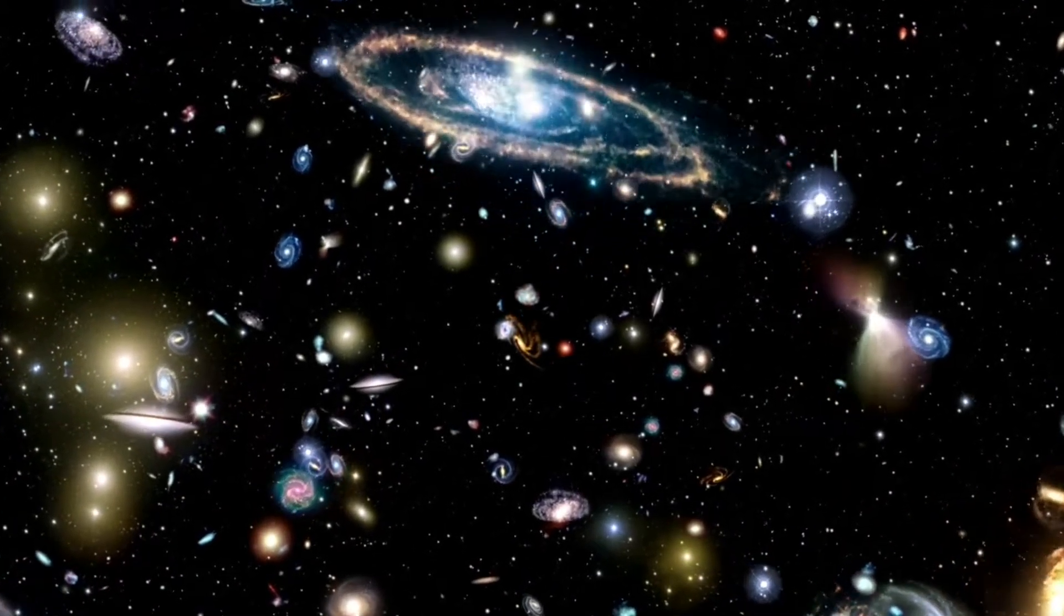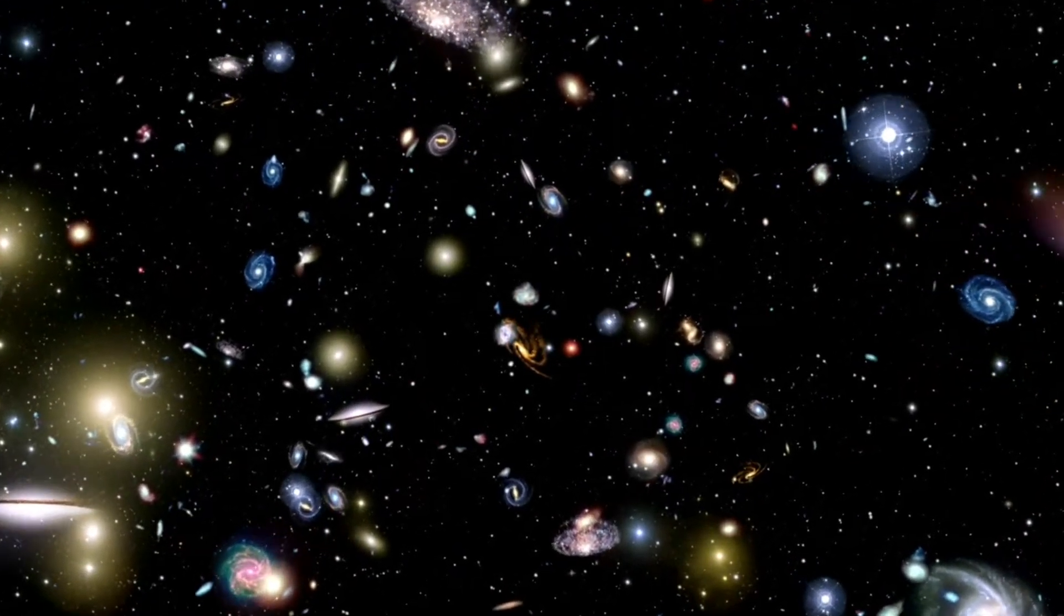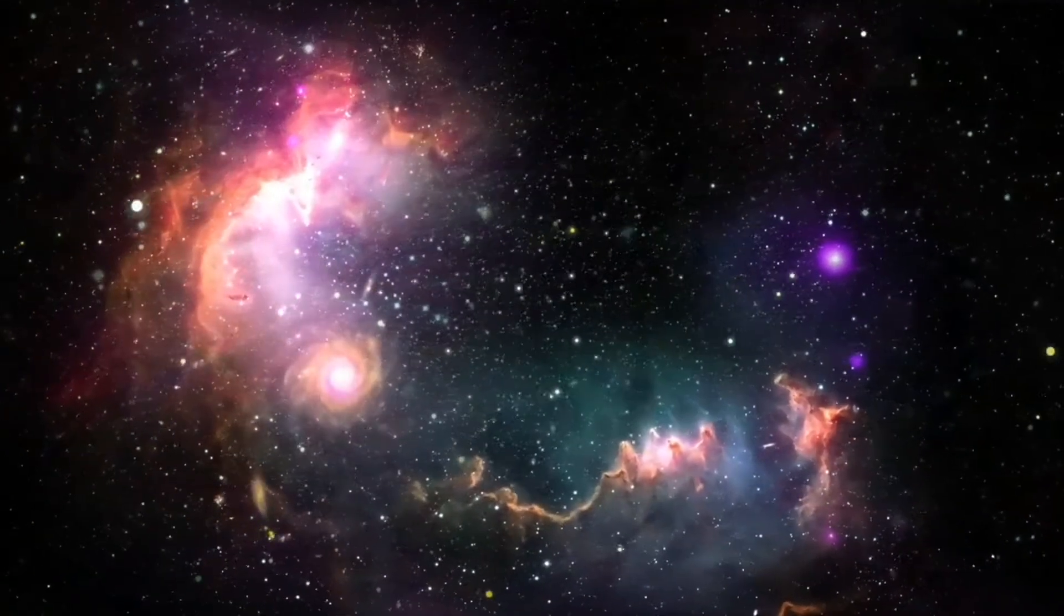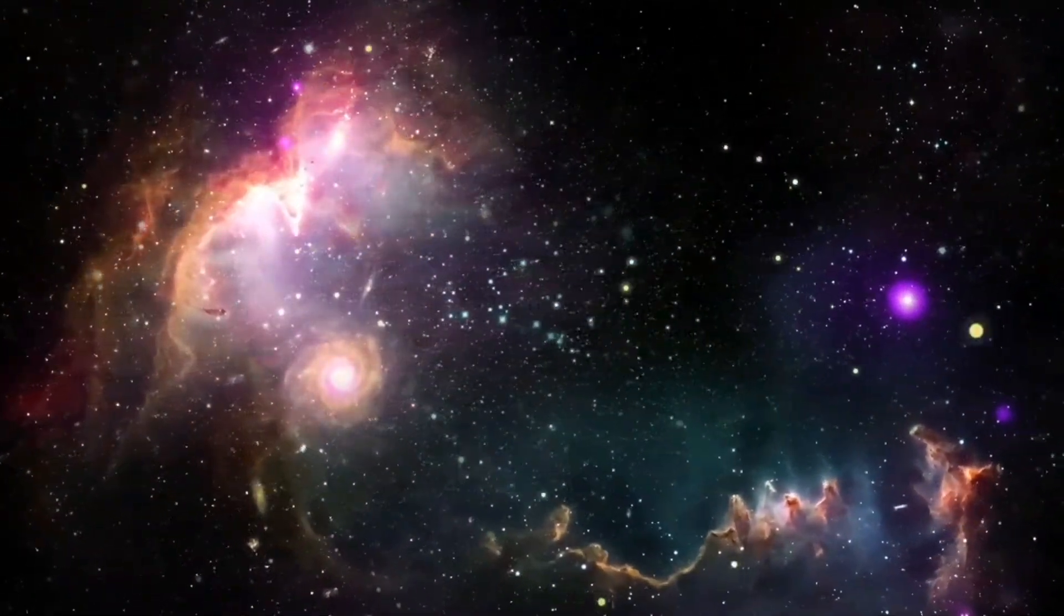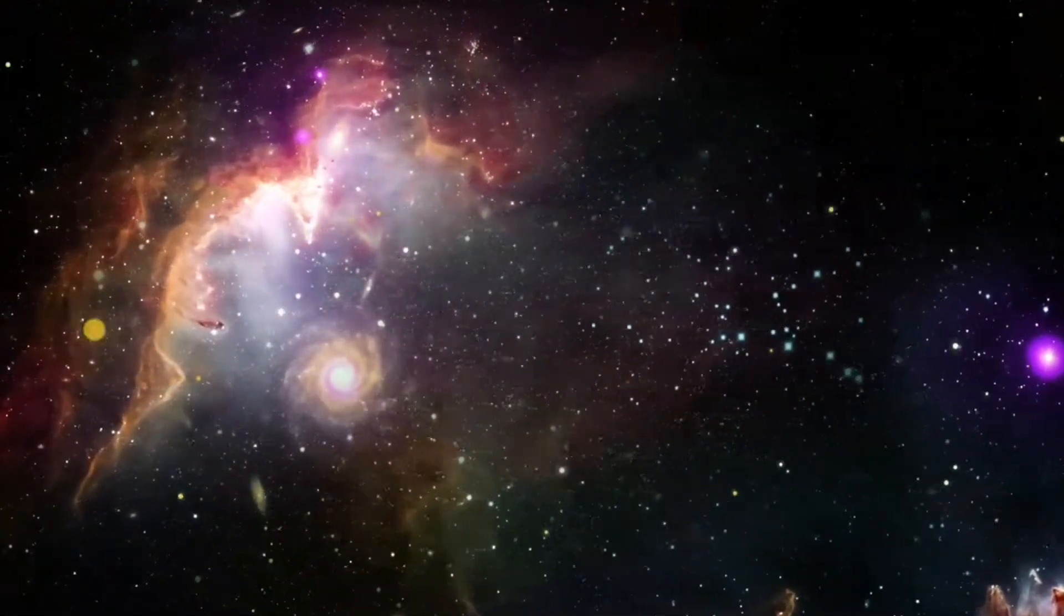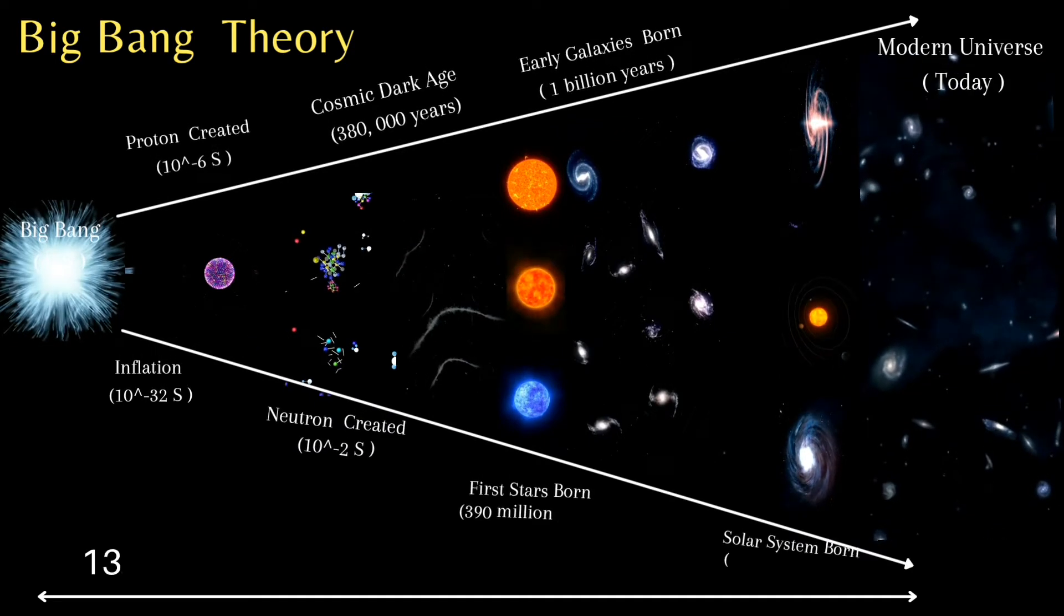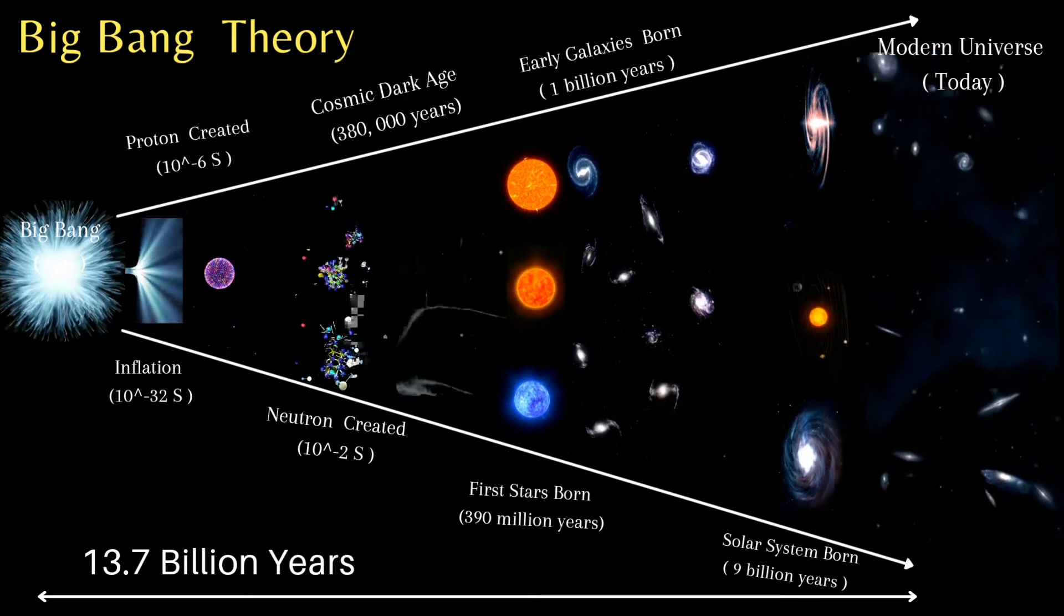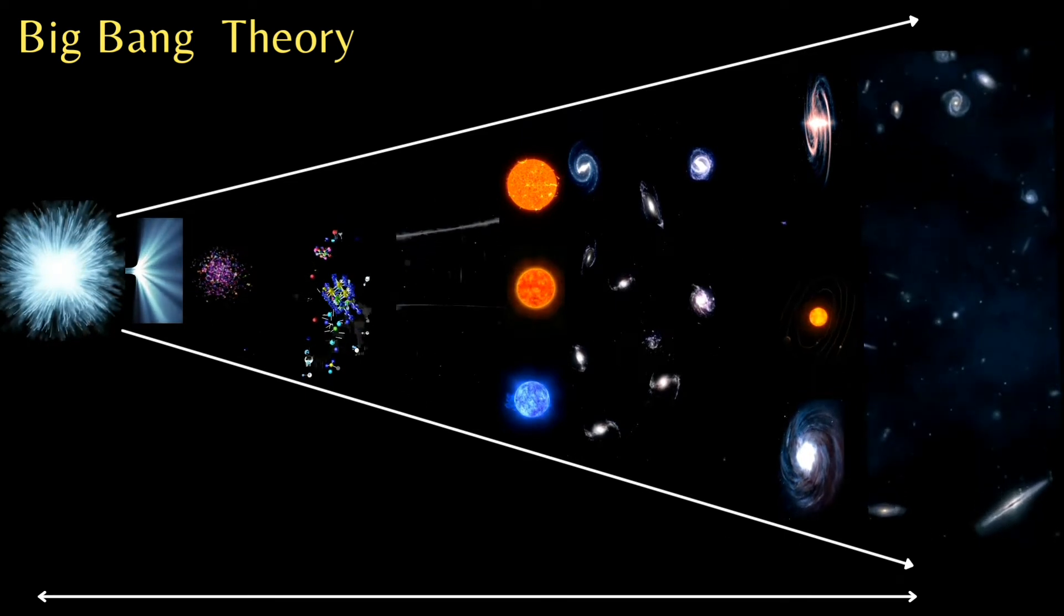But the question is how our universe was created and how galaxies, our solar system, and other stuff came to existence. The answer is, according to scientists, the widely accepted theory for the origin and evolution of the universe is the Big Bang theory, which states that the universe began from an incredibly hot, dense point about 13.7 billion years ago. So let's discuss briefly the stages of the 13.7 billion year journey of our universe.